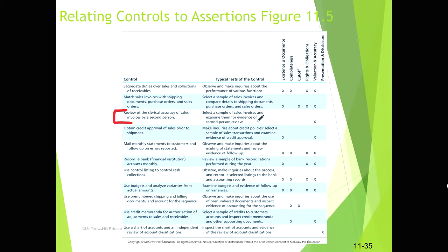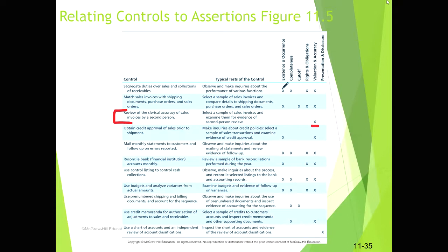For example, a control where a second person reviews the accuracy of sales invoices — someone creates the invoice and someone else reviews it for accuracy — is clearly related to the accuracy assertion. To test it, we take a sample of invoices and look for evidence of that review. If the firm documents the review, whether manually or electronically, finding that evidence gives us comfort that the control is operating effectively.